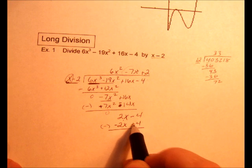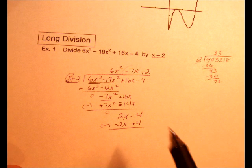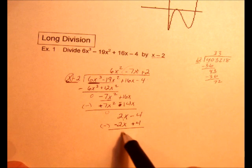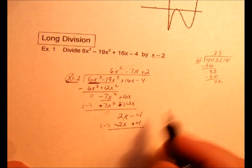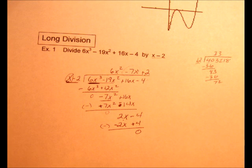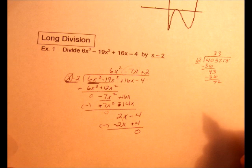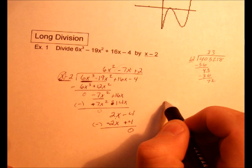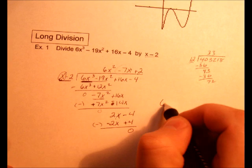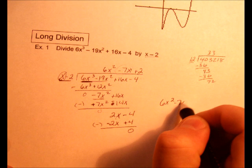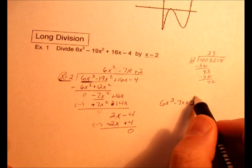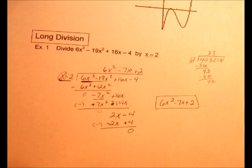2 minus 2 is 0, -4 plus 4 is 0. And the good thing is we have no remainder there. So if I was to write out the answer, that would be 6x² - 7x + 2 is what we have left over once we divide. So that's the answer to that question.